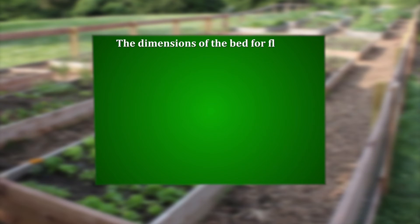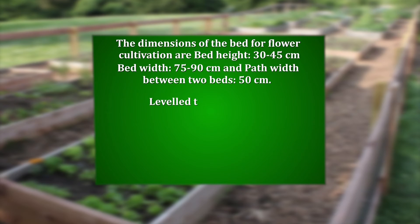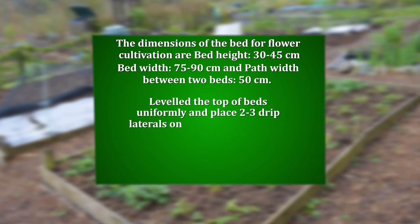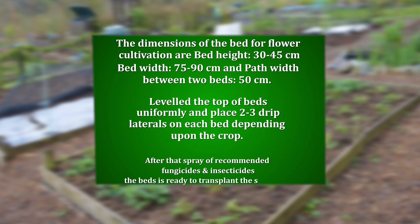Step two: we will prepare raised beds either mechanically or manually. The dimensions of the beds for flower cultivation are — bed height: 30 to 45 cm, bed width: 75 to 90 cm, and path width between two beds: 50 cm. Level the top of the bed uniformly and place two to three drip laterals on each bed depending upon the crop. After that, spray the recommended fungicides and insecticides, and the bed is ready for transplanting the seedlings.